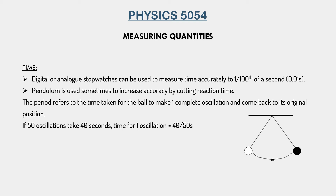Similarly, at the end, when you have to stop recording, your brain first thinks about stopping, which takes a certain time, and then you manually press the stop button — that again takes time, and these times are added to the actual time. You might think our reaction time cannot be that much, but accuracy is extremely vital for our experiments. Even if the time added is like 0.01 seconds, it can sometimes be disastrous for our experiments. So what we can do instead is use a pendulum.